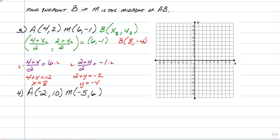So there you go. That's the algebraic way. The fastest way is just kind of thinking about how you would get from A to M and do the same thing to get to B.